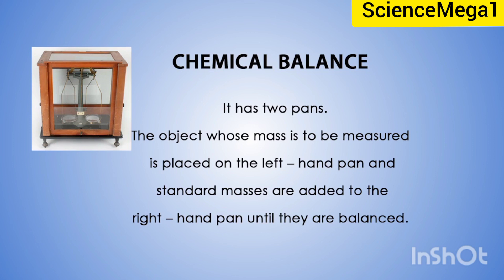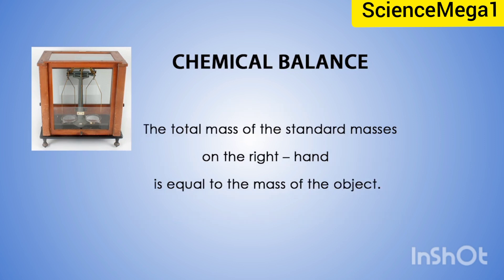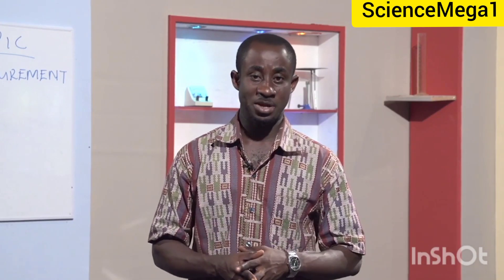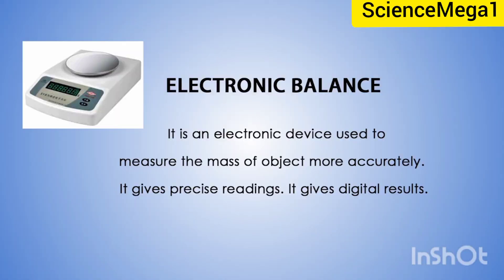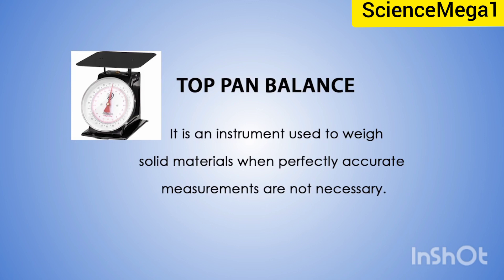For the chemical balance, it has two pans. The object whose mass is to be measured is placed on the left-hand pan, and the standard mass is added to the right-hand pan until they are balanced. The total mass of the standard masses on the right-hand pan is equal to the mass of the object. The electronic balance is an electronic device used to measure the mass of objects more accurately — it gives precise digital readings. The top pan balance is an instrument used to weigh solid materials when perfectly accurate measurements are not necessary.